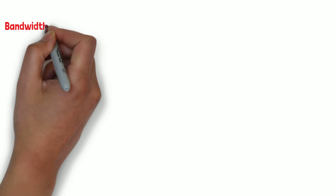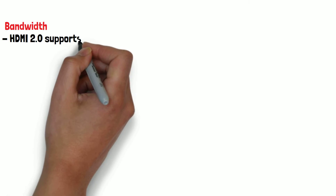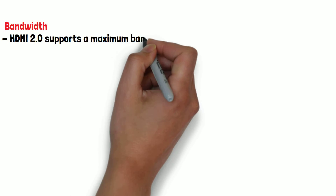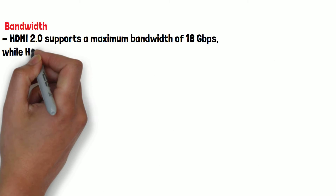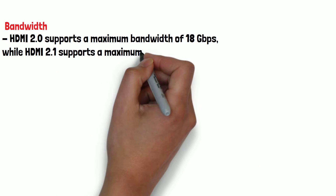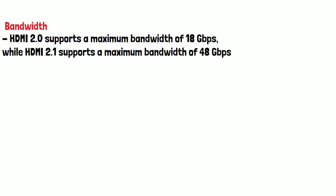Let's start with bandwidth. HDMI 2.0 supports a maximum bandwidth of 18 gigabits per second, while HDMI 2.1 supports a maximum bandwidth of 48 gigabits per second. This increased bandwidth allows for higher resolutions, frame rates, and colour depths.